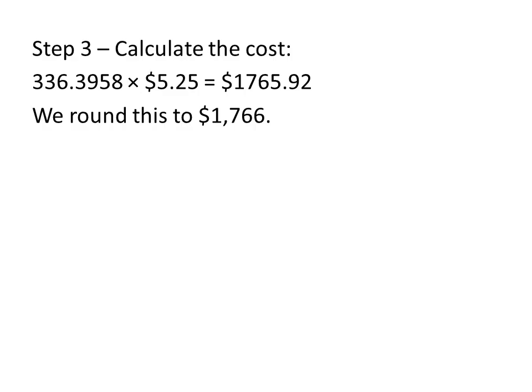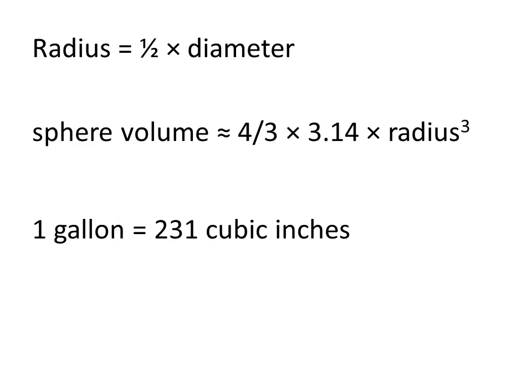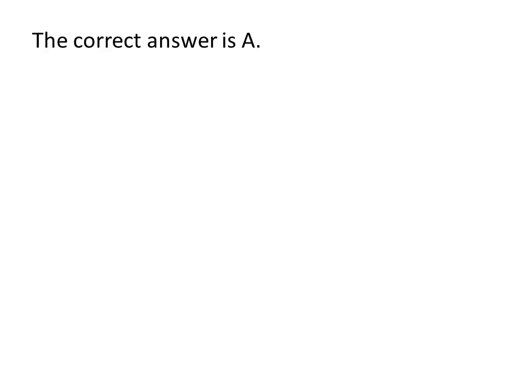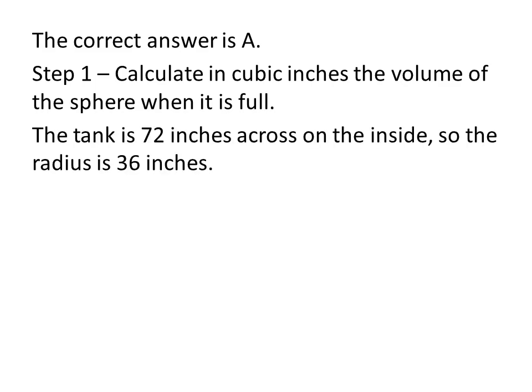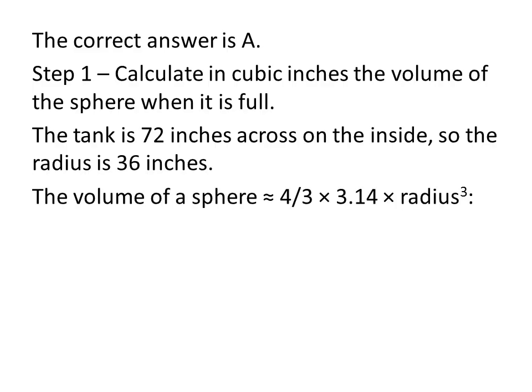Here is question 10. The correct answer is A. For the first step, you need to calculate the volume of the sphere when it's full, and you need to do that calculation in cubic inches. We know that the tank is 72 inches across on the inside, so that will be our diameter. Radius is half of the diameter, so half of 72 is 36. Looking again at our formula for the volume of a sphere, 4 over 3 times 3.14 times the radius cubed, and then putting in our figures, 4 thirds times 3.14 times our radius of 36 cubed. Multiplying that out, we get 195,333.12 cubic inches.